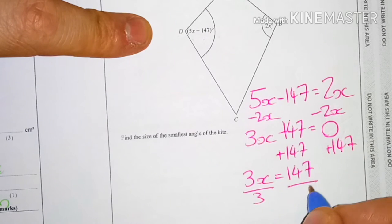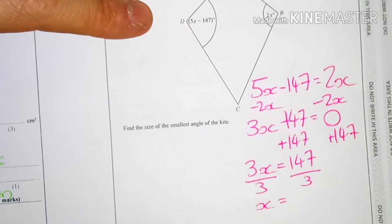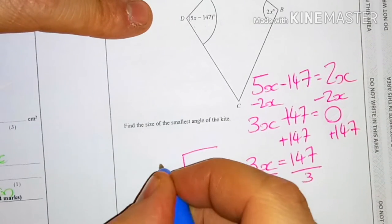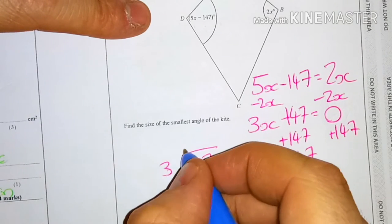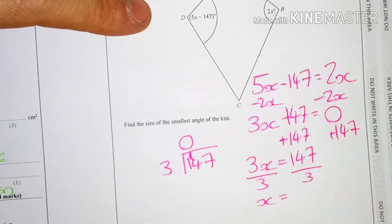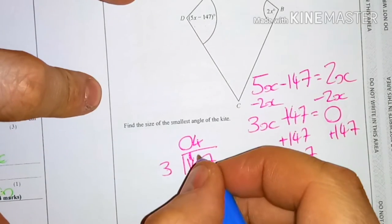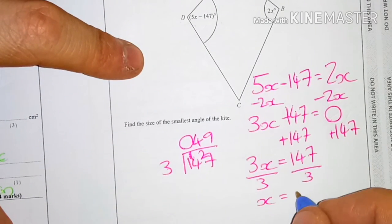To get x on its own, I need to divide by 3. So x equals—that's quite a big number and I don't know how to divide it, so I need to think about my bus stop method. 3 into 147. 3 goes into 1 zero times, I need to carry the 1 over. 3 goes into 14, it's going to be 4 times to make 12, 13, 14. We've got 2 left over. 3 times 9 is 27.